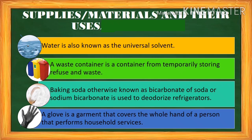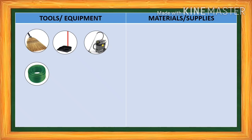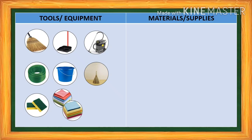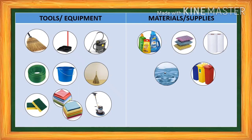So those are the different tools or equipment and materials or supplies. In tools or equipment, we have the broom, dustpan, vacuum cleaner, water hoses, bucket, cobwebber, sponge, dishcloth, cleaning cloth, and floor buffer. While on the other hand, in materials or supplies, we have cleaning detergent, liquid detergent, scrubbing foam, paper towel, water, waste container, baking soda, and the glove.